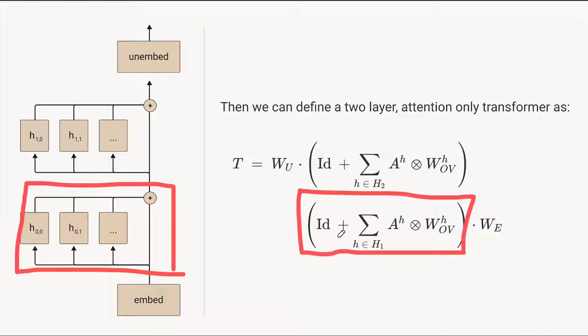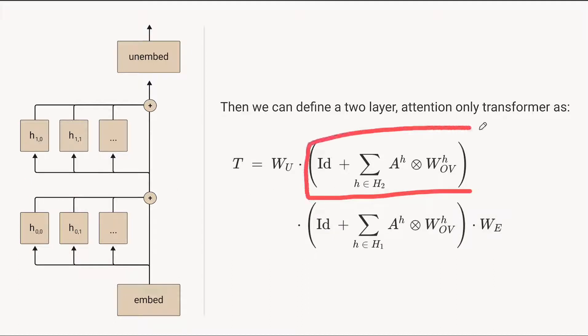And within that, we have the identity term corresponds to this path. And then all of these attention head terms that correspond to these paths. And then we have the second layer attention heads. And then finally, we have our good old unembedding.